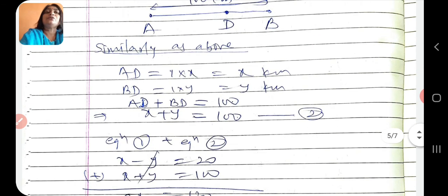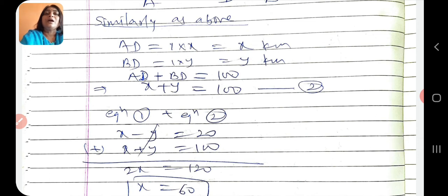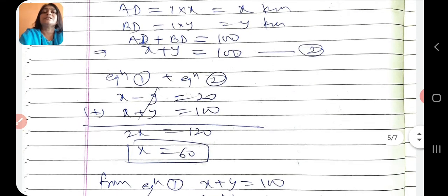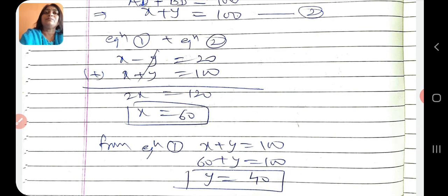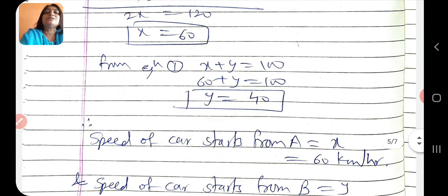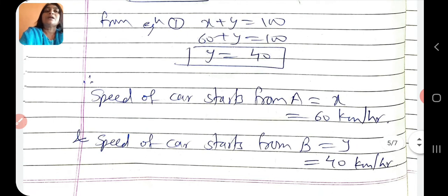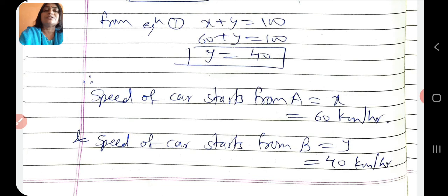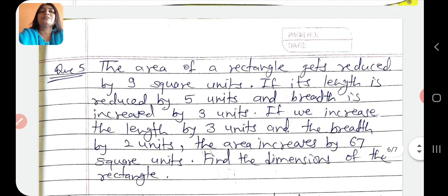Speed of car starting from A is x equals 60 km/hr and speed of car starting from B is y equals 40 km/hr. Is tarike se hum is question ko solve kar sakte hain. Question thoda lengthy hai, isko ek baar phir se revise kijiye aur samajh mein aa jayega. Ab hum ek last question exercise ka lenge.